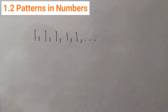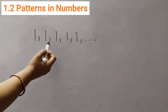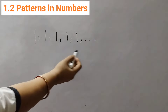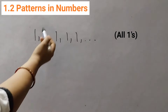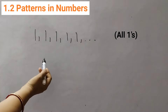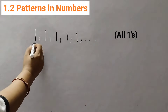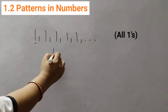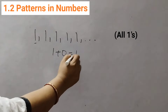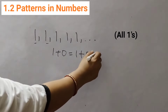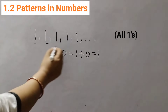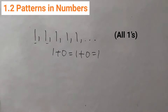The first one is 1, 1, 1, 1, 1, 1. This is called all 1's. Here what are we doing? We are just adding 0. 1 plus 0 is 1. So just keep adding 0 and you will get the pattern. That's why it's called all 1's.